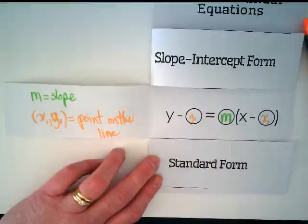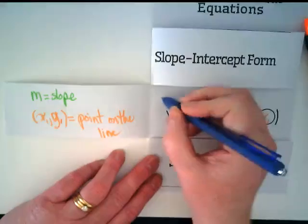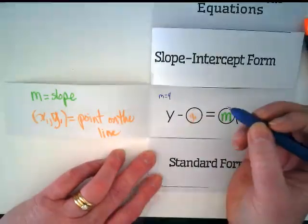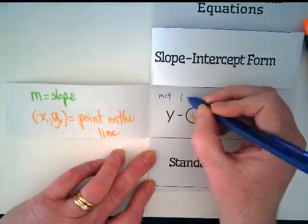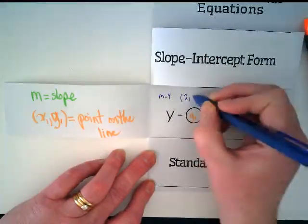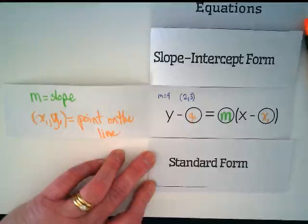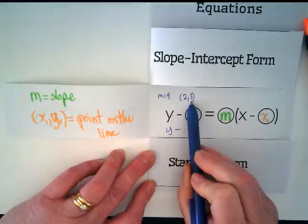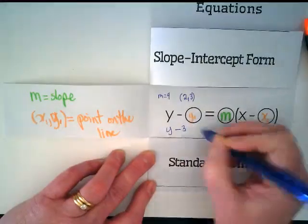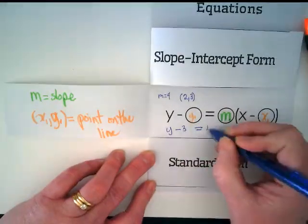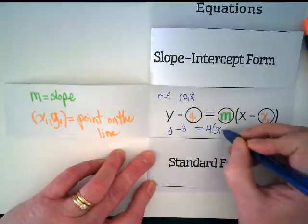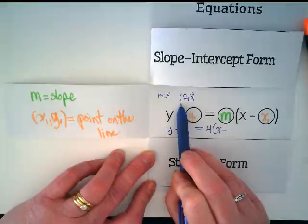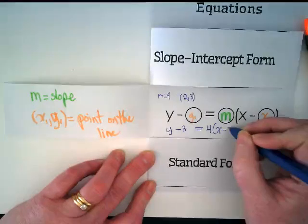So for example, if I give you that slope is four, and the x, y pair is two comma three, we would rewrite this as y minus the three is in the y place in the x, y pair is equal to the slope times x minus the two. This is in the x part in the point pair. And I put the two there.